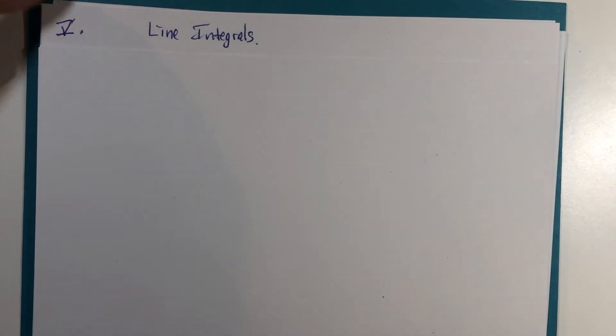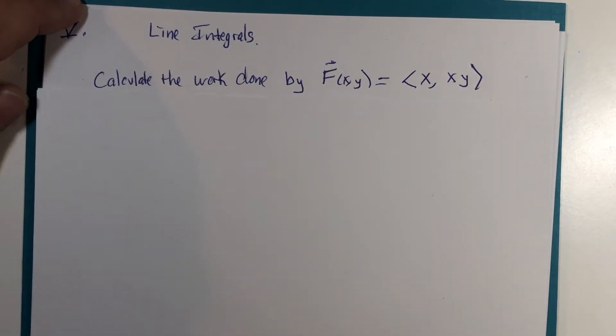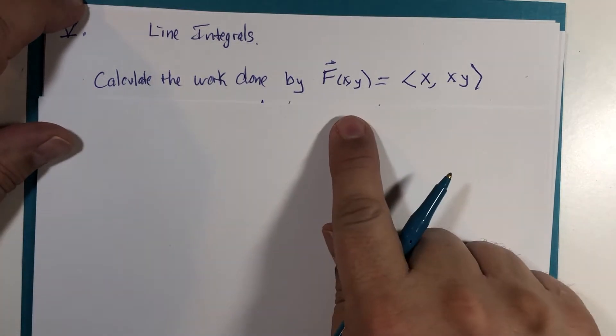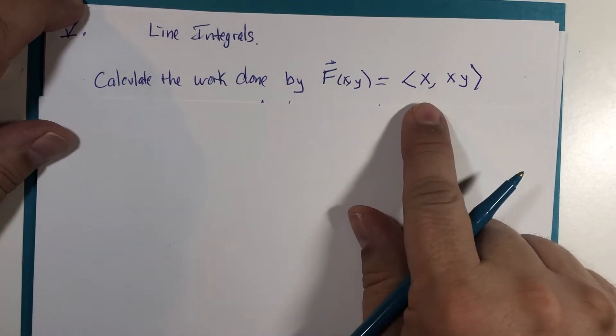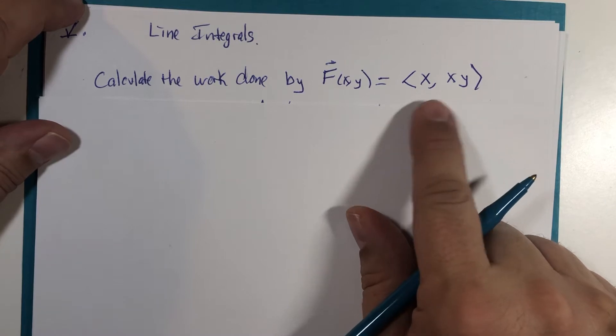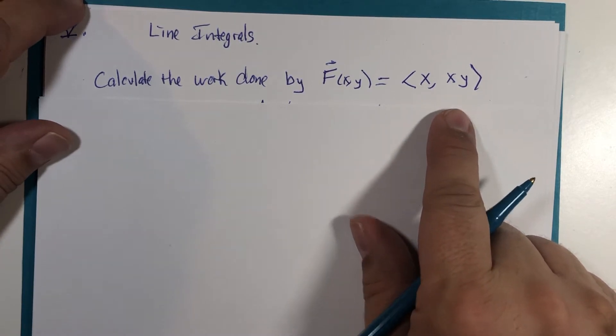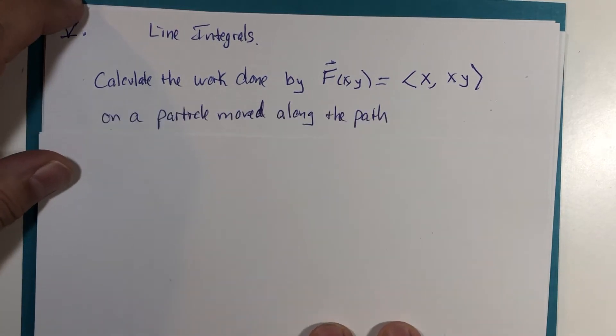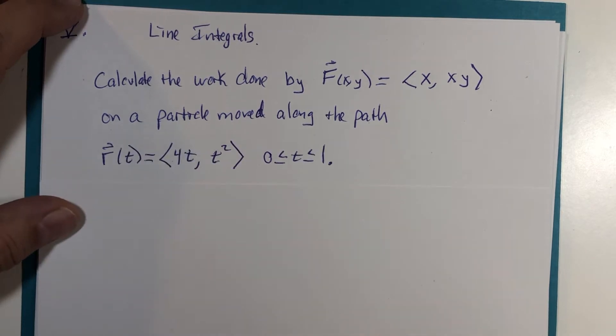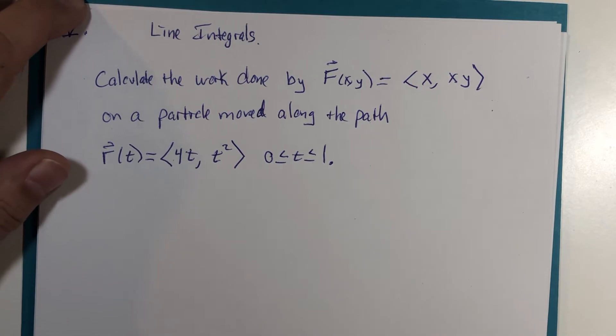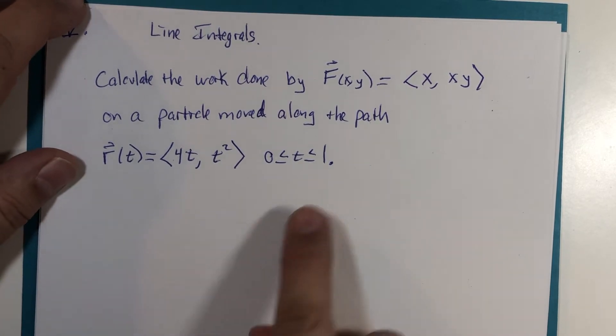We are going to calculate the work done by a force or a vector field <x, xy>, or xi plus xyj if you prefer the ij notation, and we're going to look at what this work has done on a particle moved along the path r(t) = <4t, t²> from 0 to 1.